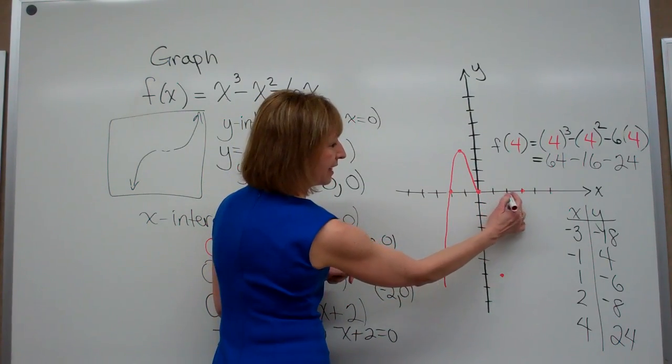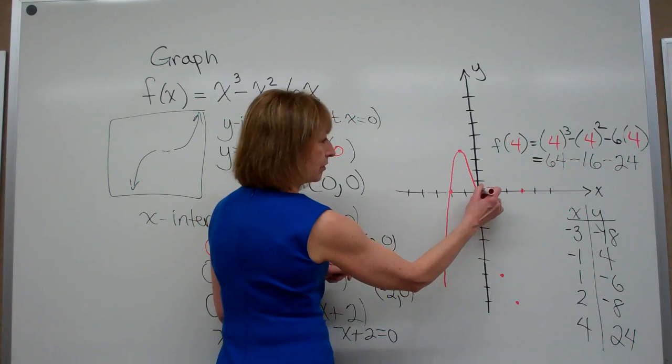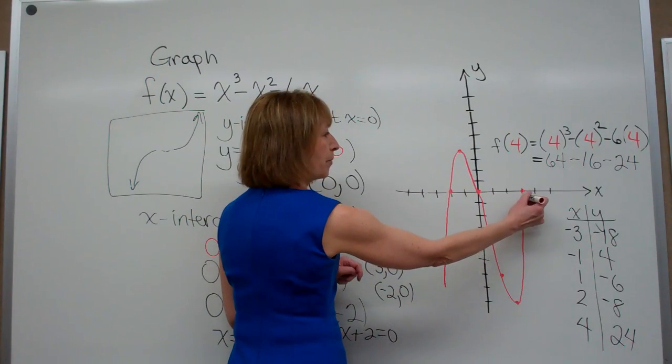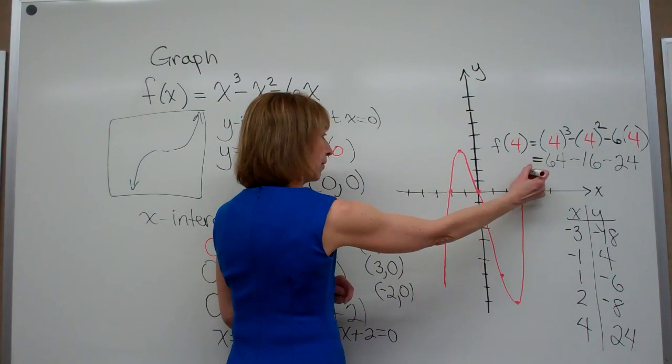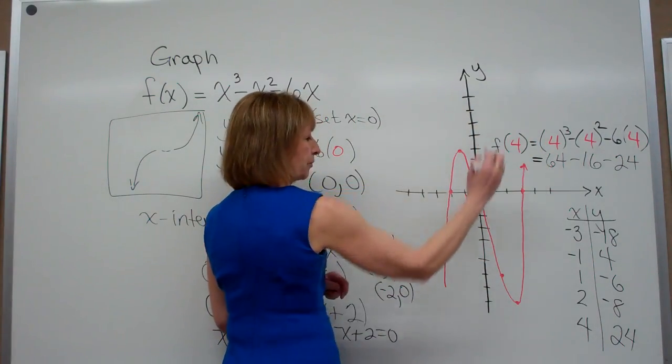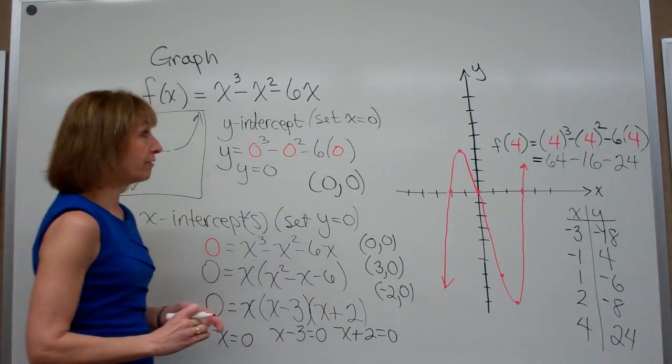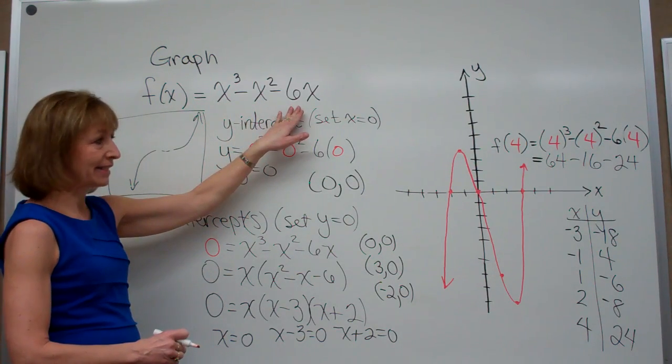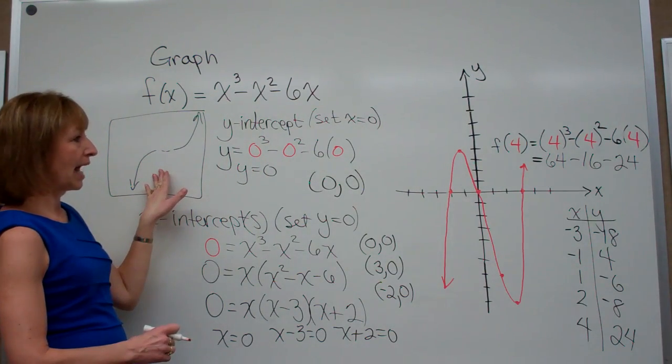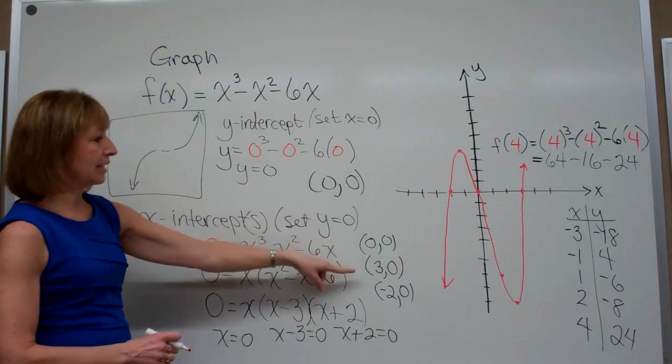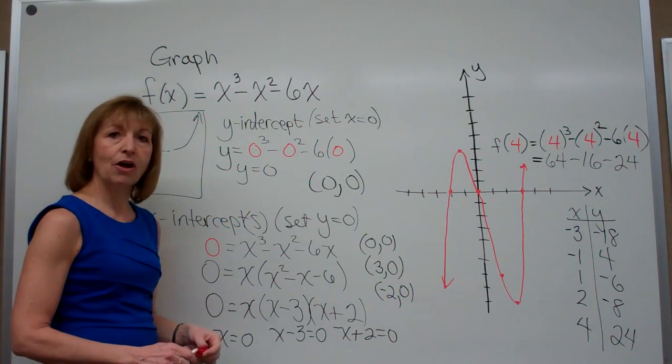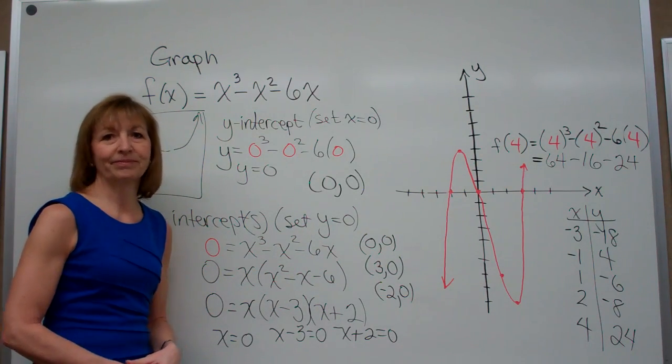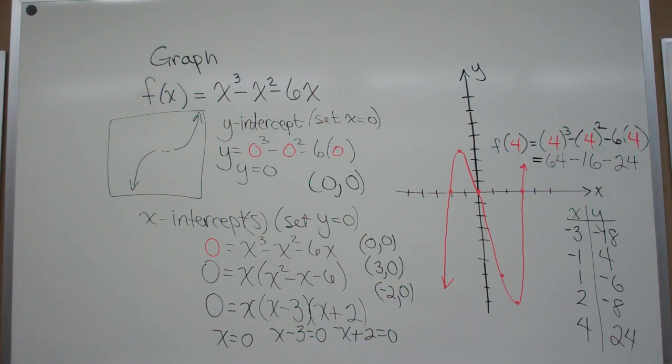At 2, we have -8. So I'm going to come down through these ordered pair graphs of those dots, up back through (3, 0), and then up towards (4, 24). So there is the graph of our polynomial function f(x) = x³ - x² - 6x. And you see that we have our end behavior the way we expect, and each of our x-intercepts and our y-intercepts all verified by what we also got out from our x coordinates in our table. Thank you.